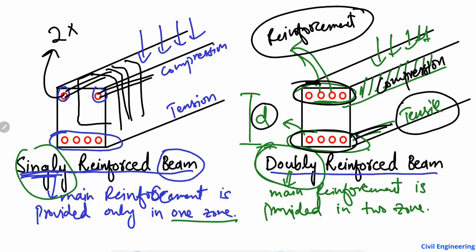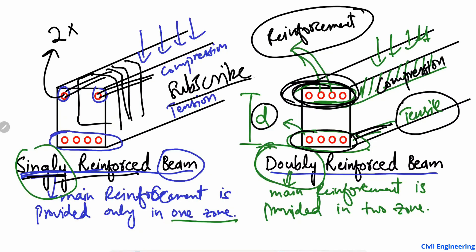So the difference is very simple: in a singly reinforced beam, the main reinforcement is provided only in one zone — mainly the tension zone. When the reinforcement is provided in both the tension and compression zones, we call it a doubly reinforced beam. This is done in order to increase the compressive stress capacity at the top of the beam. Hope you guys understand — don't forget to subscribe to our channel for civil engineering videos. Thank you for watching.